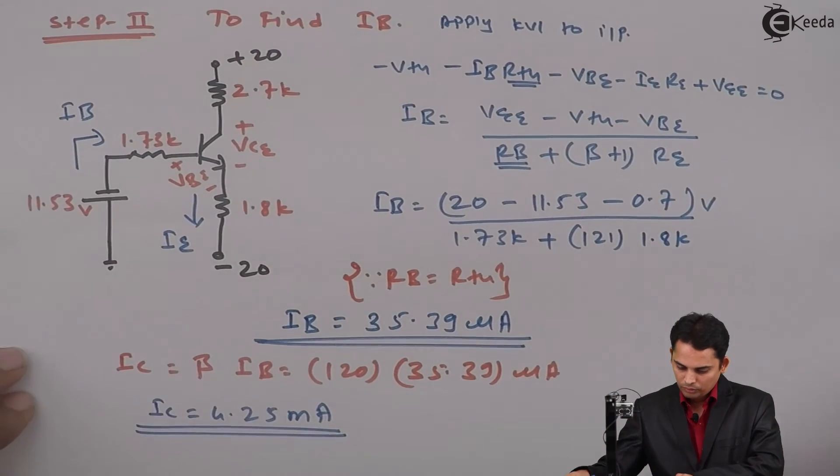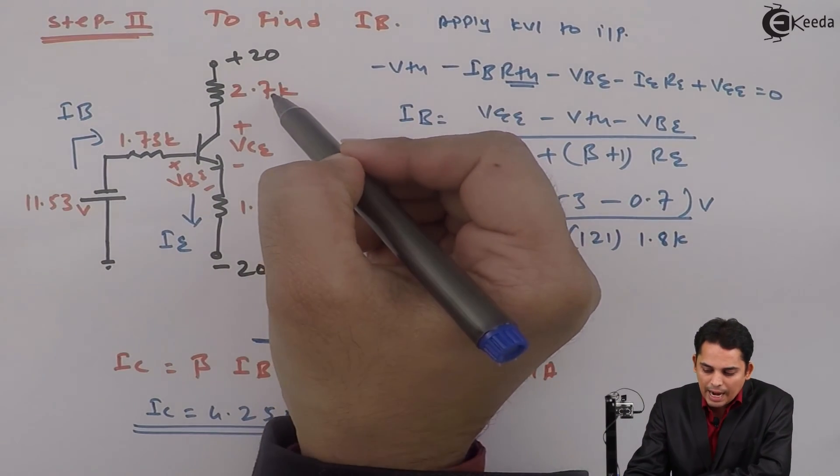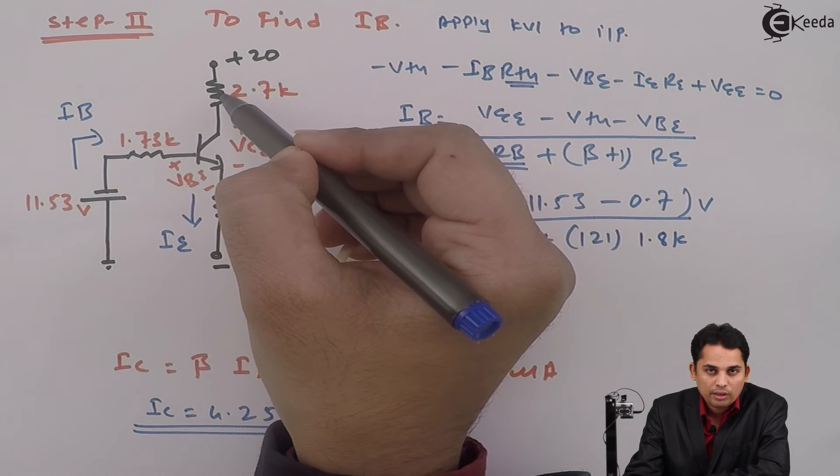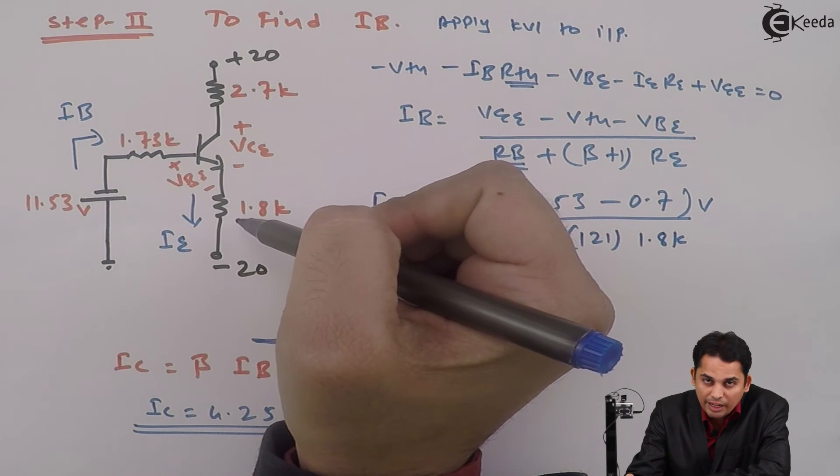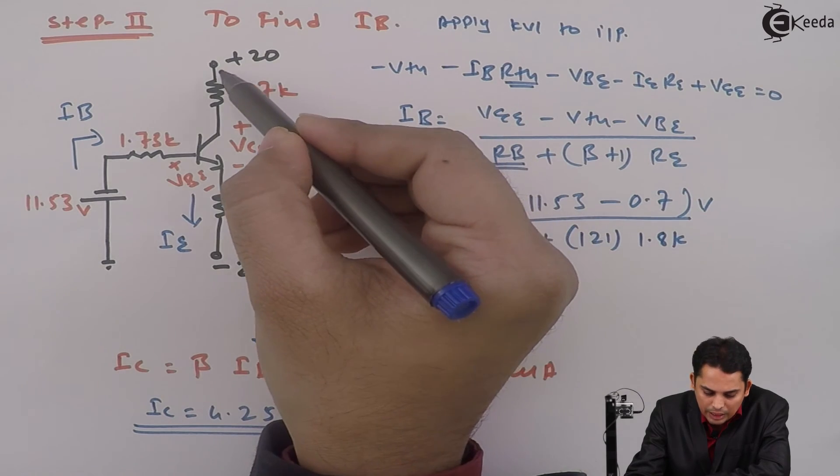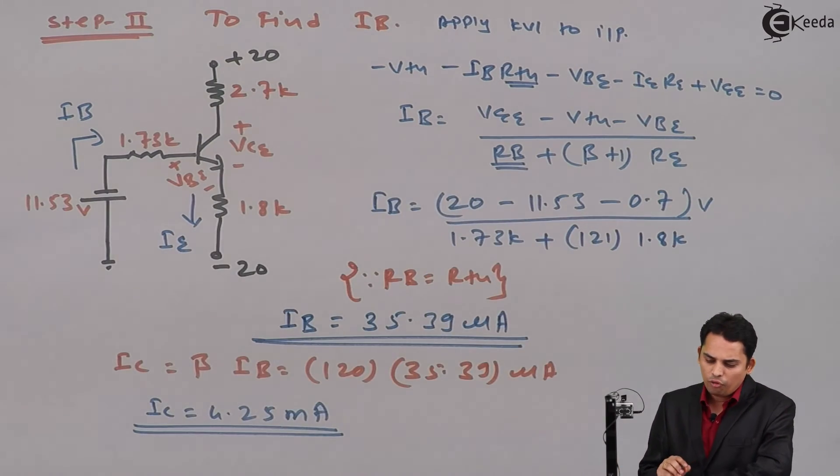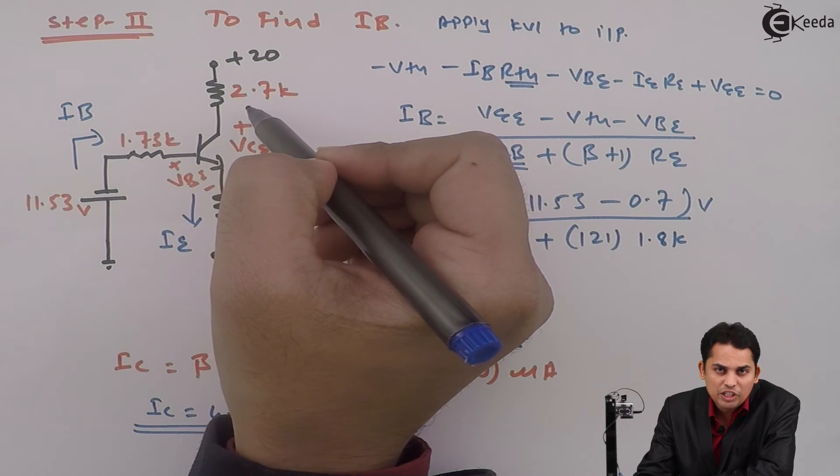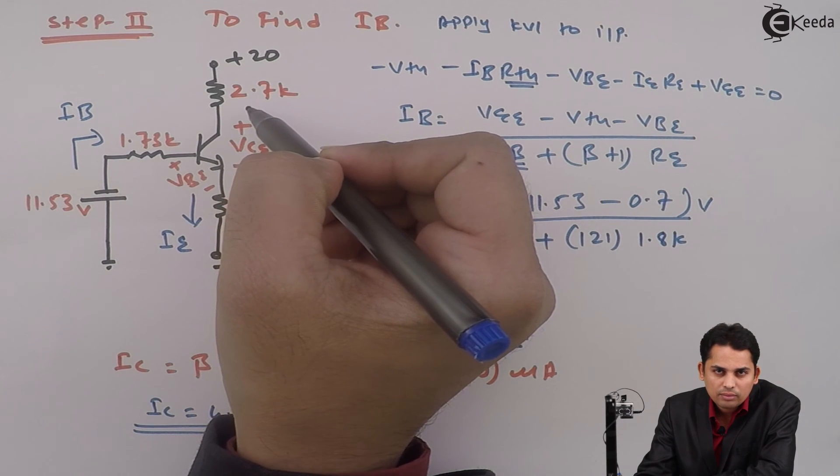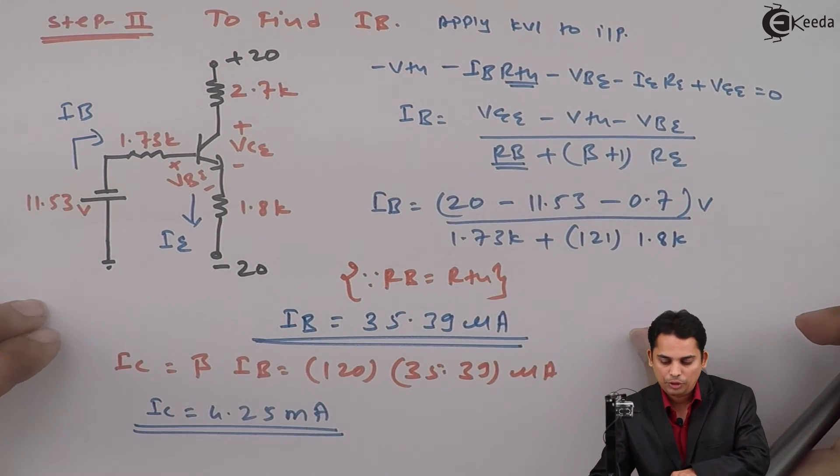So they have asked you to find out VC and VB. The voltage at this point is called as VC. Voltage between collector to emitter is VCE whereas voltage at collector is called as VC. And VC we can get as VCC minus IC into RC. We will see that in step 3.